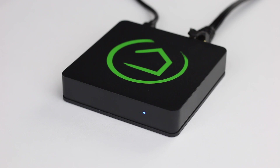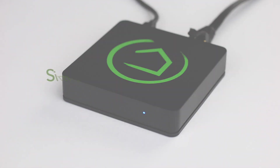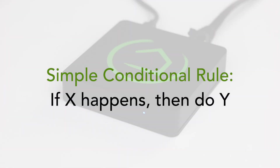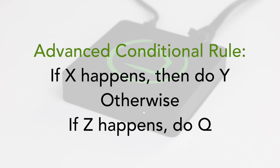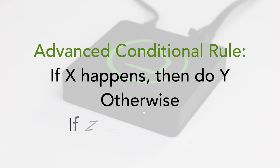In our first Rule Machine video we set up a simple conditional rule — a simple if X happens then do Y. If you haven't watched that yet, please check it out. Today we're going to go deeper and explore a more advanced conditional rule where if X happens do Y, but if Z happens do Q.